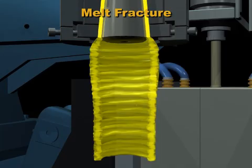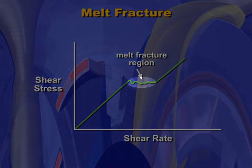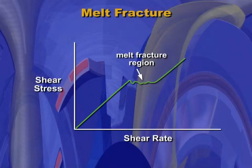You may occasionally find a problem called melt fracture. It is a condition where the plastic flow out of the die head becomes unstable — the plastic seems to surge and the parison becomes rough and distorted. For each plastic and die head there is a critical range of flow rates where melt fracture occurs. It can be eliminated at flow rates either above or below this critical range. Plastics of the same type but from different suppliers have different sensitivities to melt fracture.